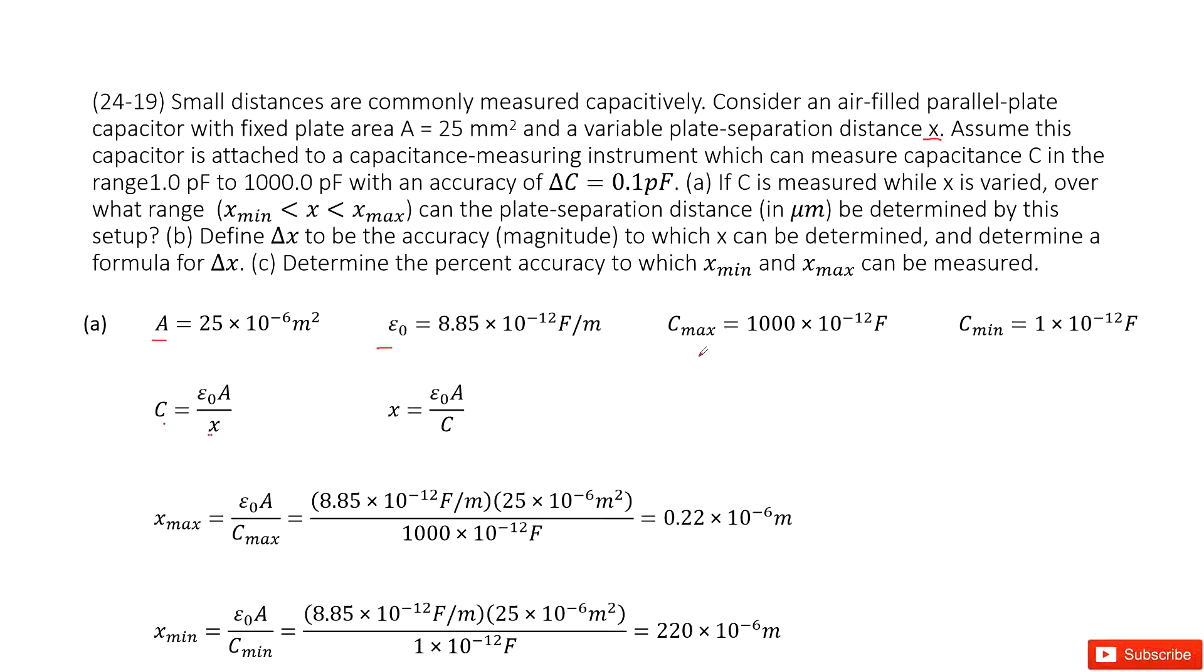In this case, we can see the maximum capacitance is given and the minimum capacitance is given, asking you to find the maximum x and minimum x. So we can just do the calculation for x in this function. Converting this function, we can find the distance between the two planes equals epsilon naught times A over C.